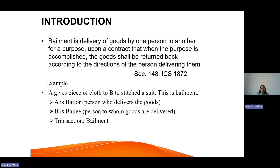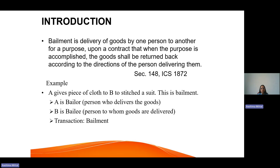What exactly happens in bailment is that some goods are delivered by one party to another for a particular purpose, and when this purpose is accomplished, the goods are delivered back to the owner. For example, when we give our goods to a tailor for stitching — suppose A gives a piece of cloth to B to stitch a suit — this is a bailment.